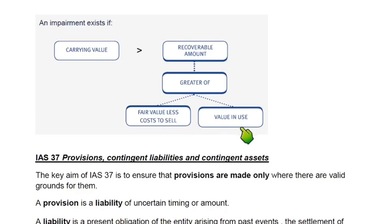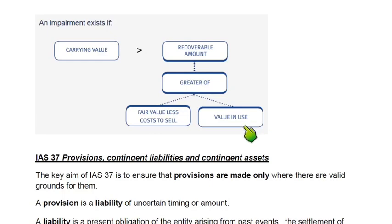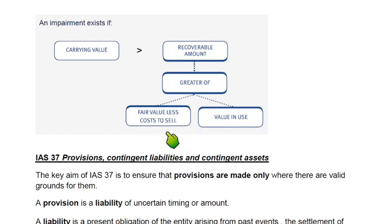Value in use is calculated by discounting all future cash flows to their present value — similar to calculating NPV in investment appraisal. In exam settings, value in use is mostly given directly. We then take the higher of fair value less cost to sell and value in use; this higher figure becomes the recoverable amount. If the carrying value is greater than the recoverable amount, the difference is the impairment loss.